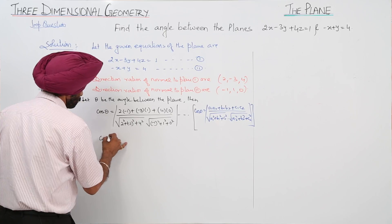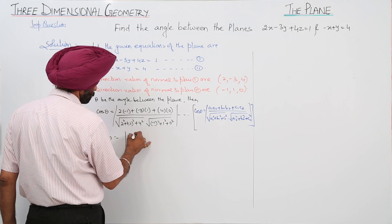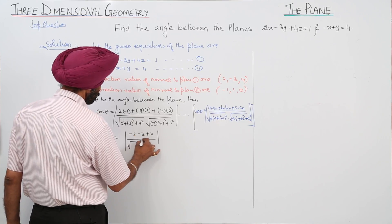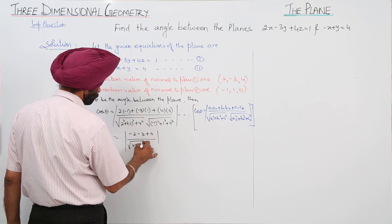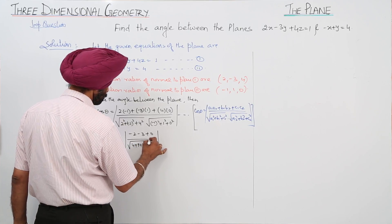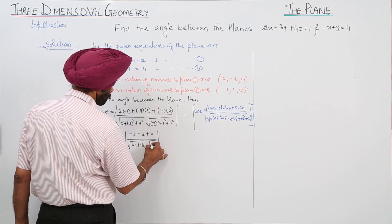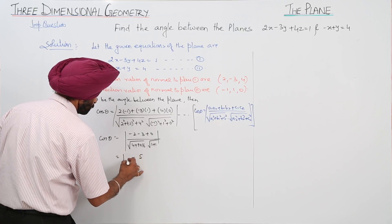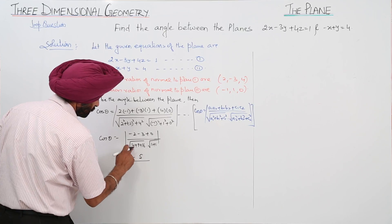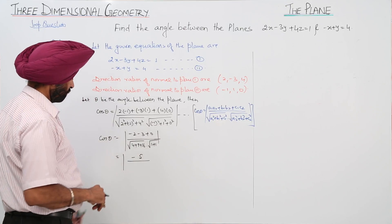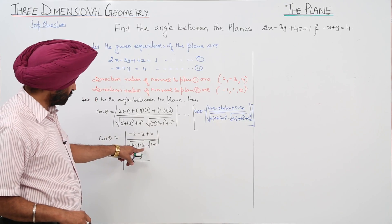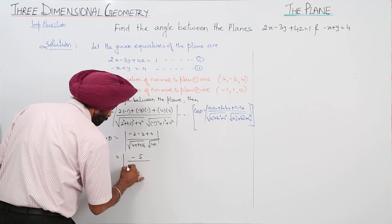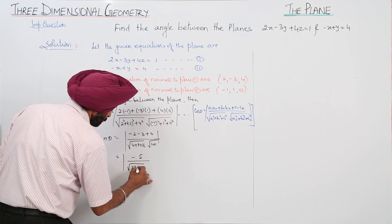Substituting values: cos theta equals (2·(minus1) plus (minus3)·1 plus 4·0) upon the square root of (4 plus 9 plus 16) with (1 plus 1 plus 0). This gives minus 5 upon the square root of 39 with 2, which equals the square root of 78.